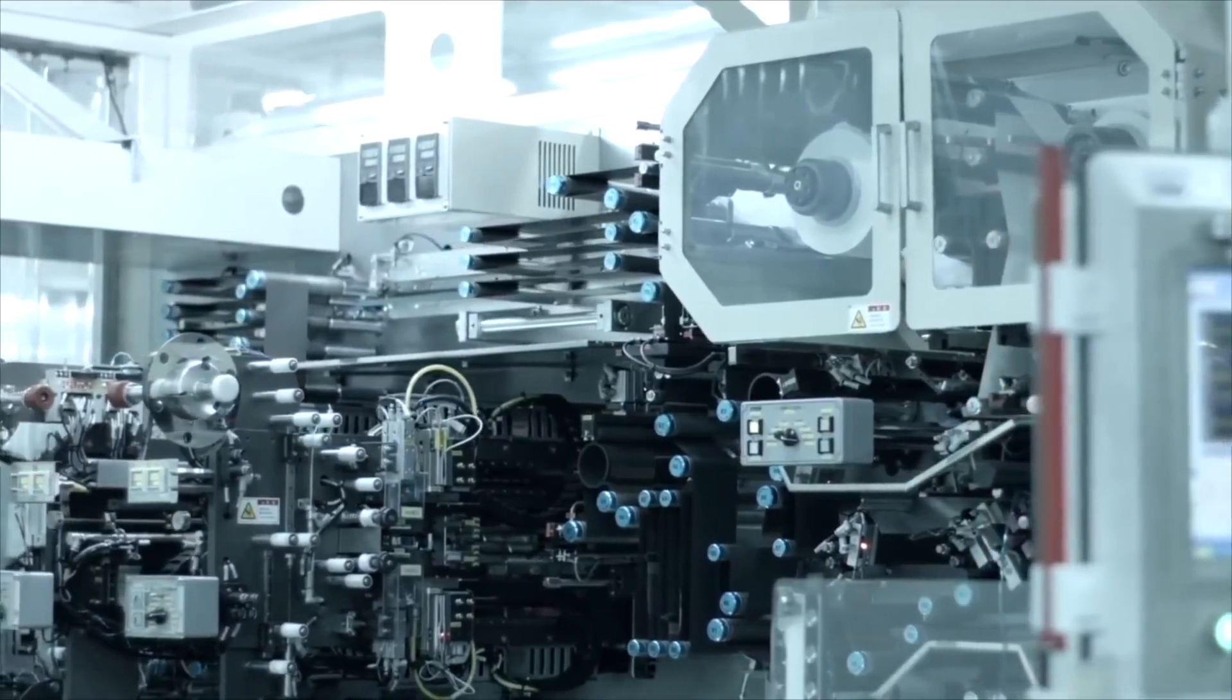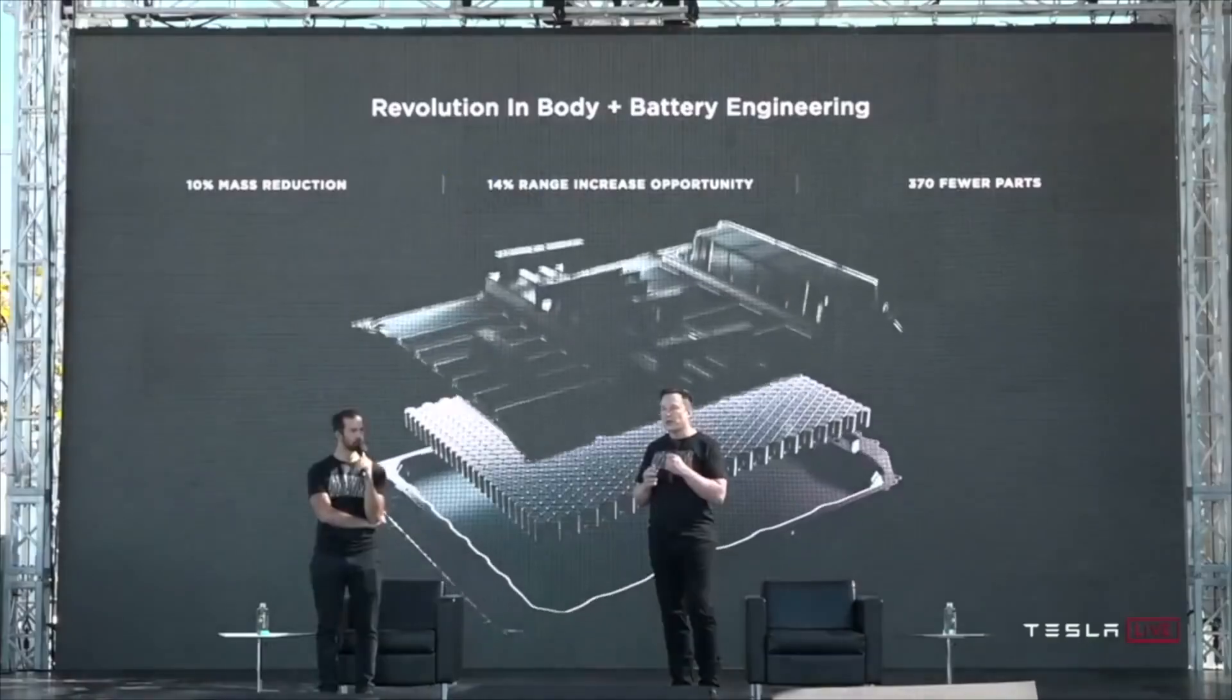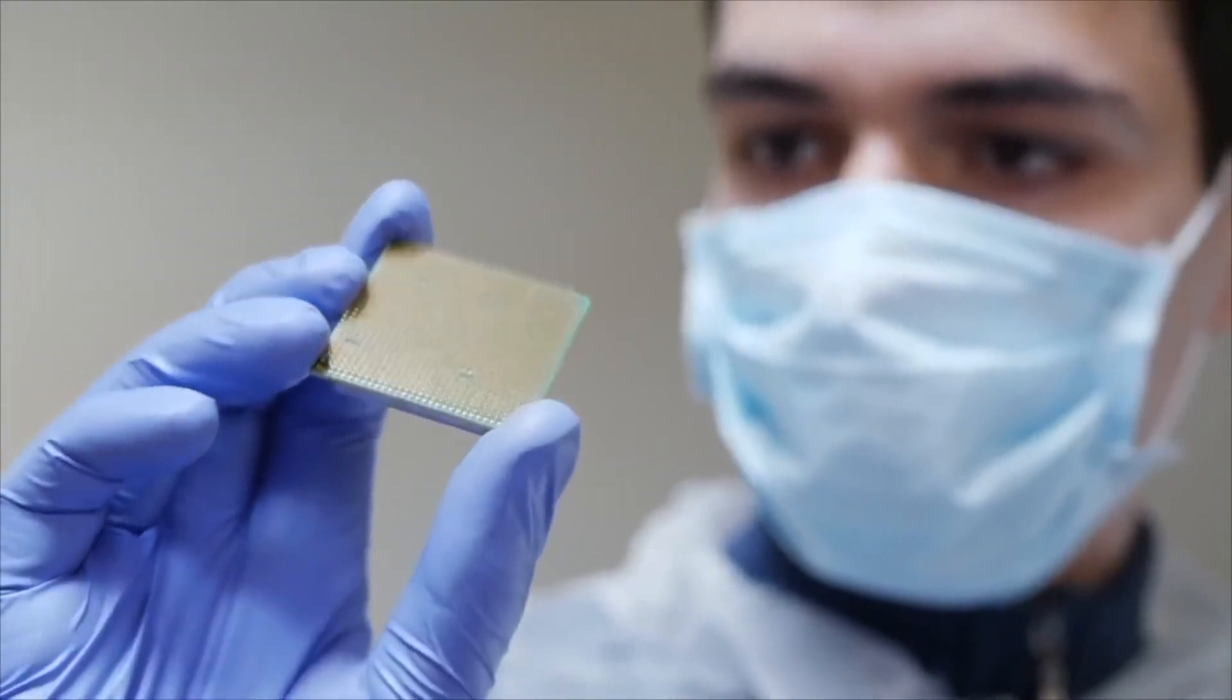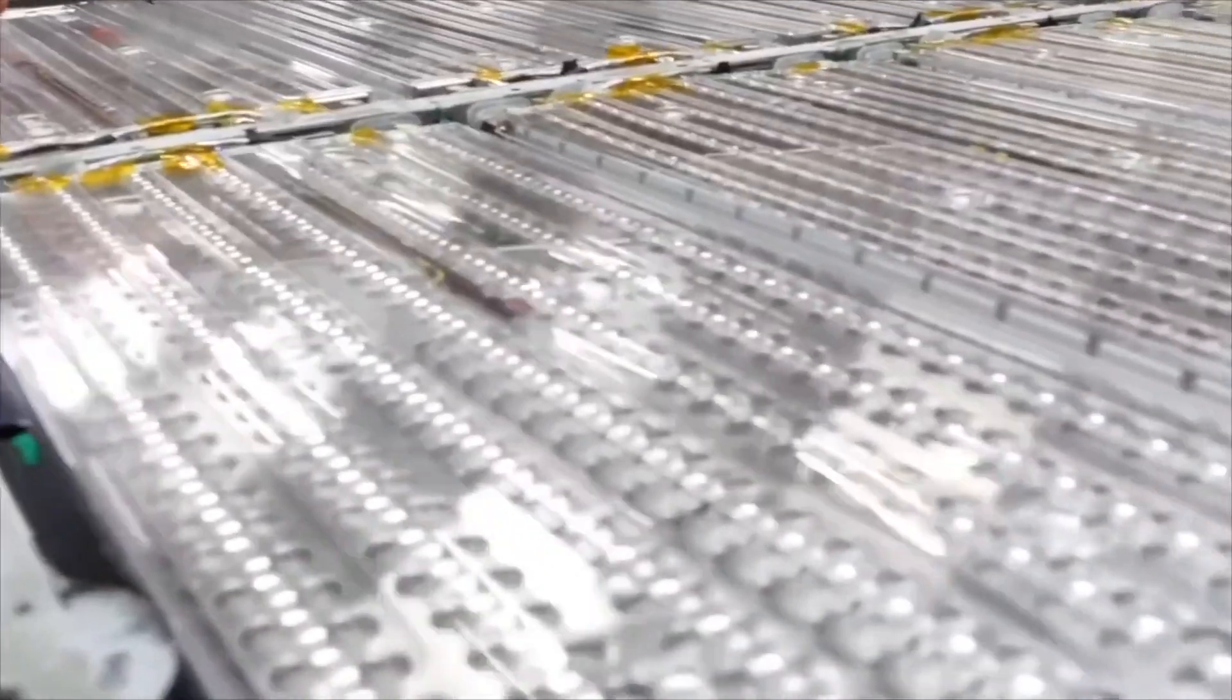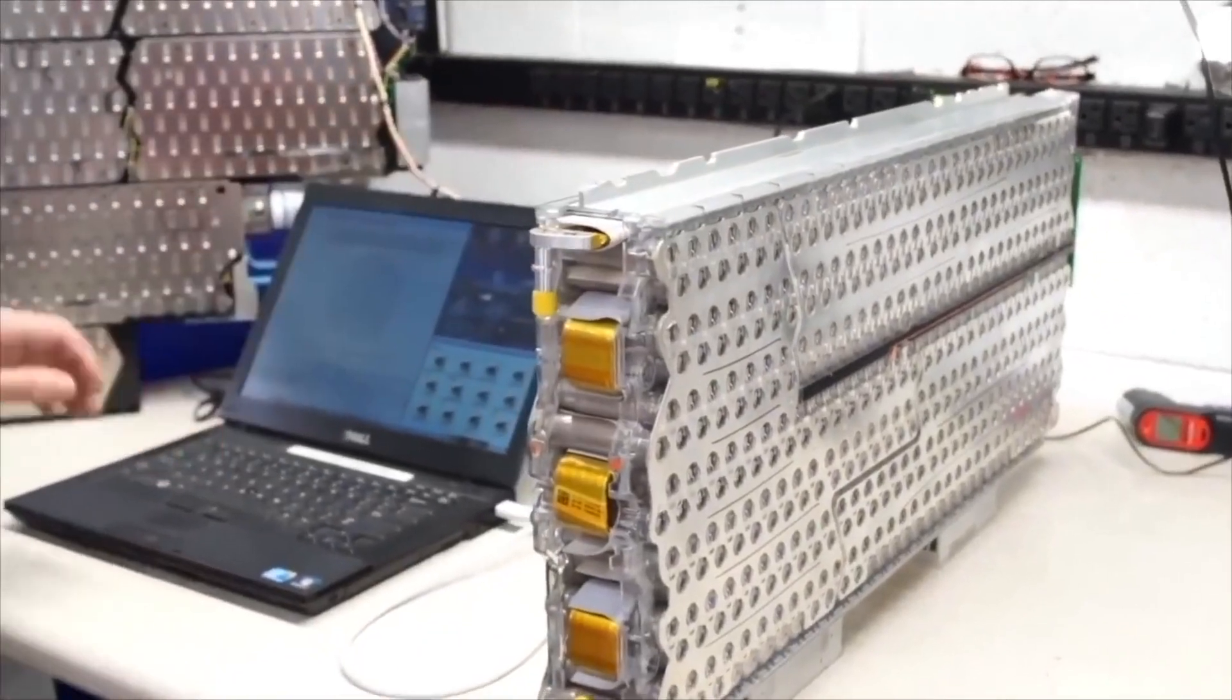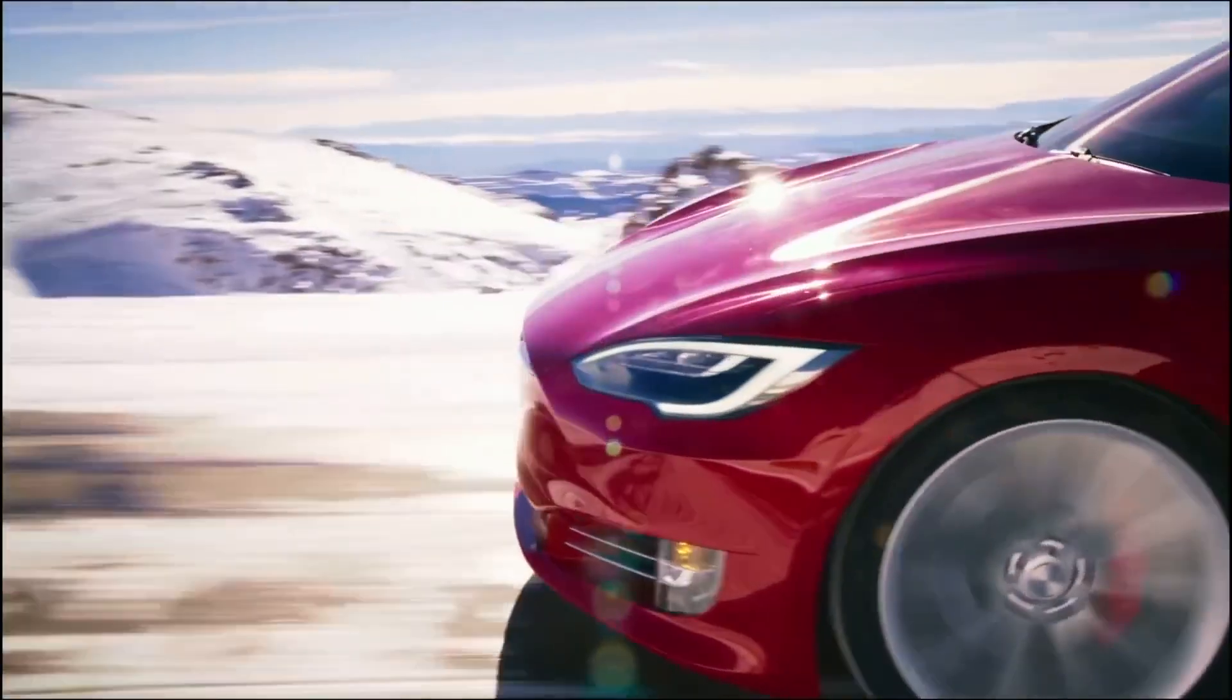He believes that Tesla has started installing the equipment for the 4680 cell production line at Giga Texas. Roberts' video suggests that the equipment has finally arrived at Giga Texas. Similar boxes or shipments may be delivered to Giga Berlin soon, too.